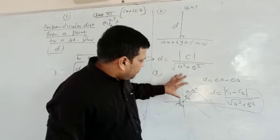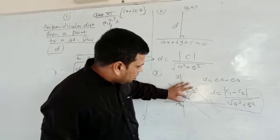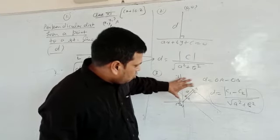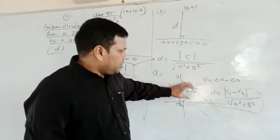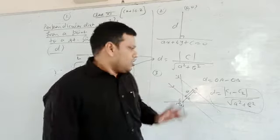So if we subtract this distance, small distance from the bigger one, OA minus OB will give us the D. So we can find out the D directly between two parallel lines.